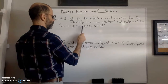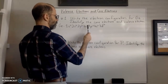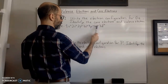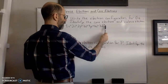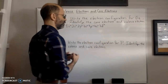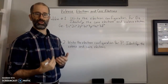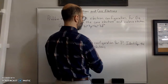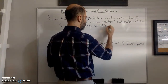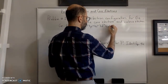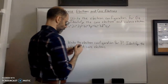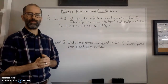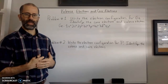That gives us 30 electrons: 2 plus 2 is 4, plus 6 is 10, plus 2 and 6 and 4 is another 10, so that's 20, and then we have 30. But we have a total of 32 electrons, so after the 3d comes the 4p, and we have 2 electrons in there.